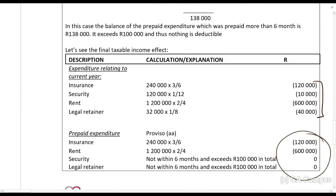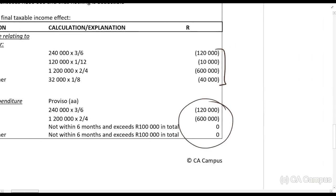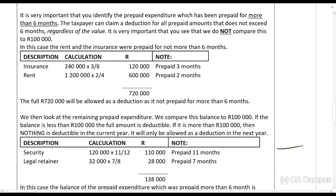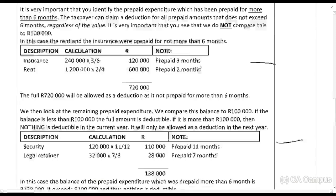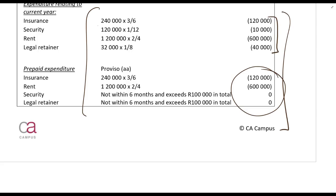So that is prepaid expenditure — it's an important section but pretty simple. You can see I went through it in very detailed step-by-step fashion, which is basically the same as what's shown in that table. You're welcome to use that table format if it's quicker, or any other format, as long as you can produce this exact answer.